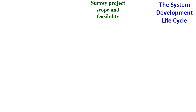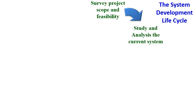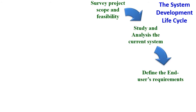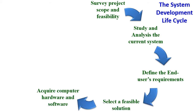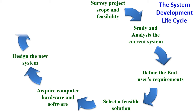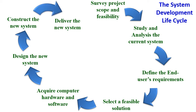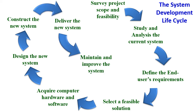The System Development Lifecycle starts with surveying the project scope and feasibility, then studying and analyzing the current system, defining the end user requirements, selecting a feasible solution, acquiring computer hardware and software, designing the new system, constructing the new system, delivering the new system, and finally maintaining and improving the system.